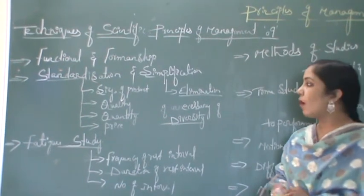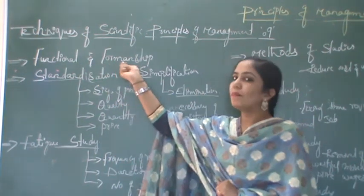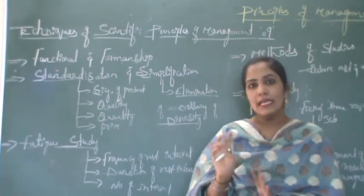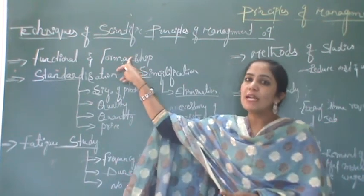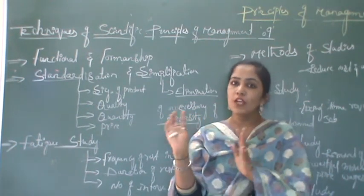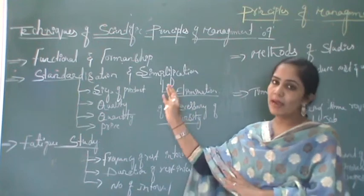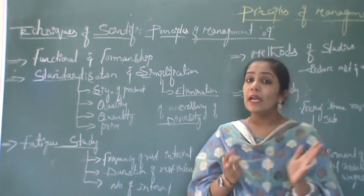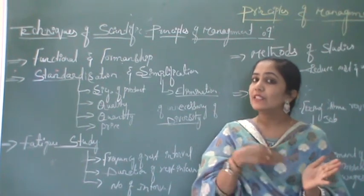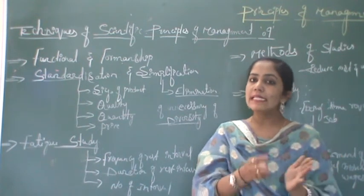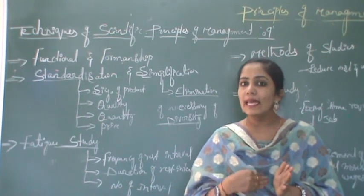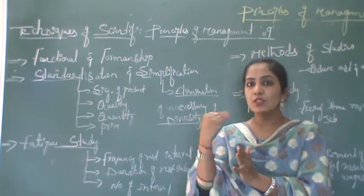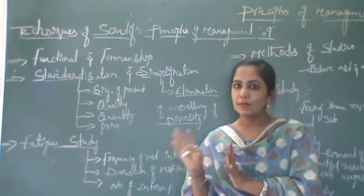In the last class we already learned about the first technique: functional foremanship. As I mentioned, 'functional' refers to the area where production activity is carried out, whereas the 'foreman' refers to the group heads — heads of the groups. In functional foremanship, the organization is classified under two major departments: the planning department and the production department. Each department has several heads who perform their duties and responsibilities as per their designation.